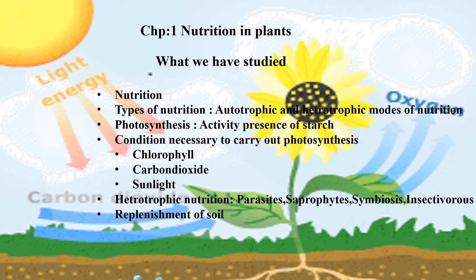Later on we studied about what is heterotrophic mode of nutrition. We have seen parasites, which are either partial or complete parasites — those who are completely dependent on the host plant for their food and other requirements. Then we have seen about saprophytes, that is organisms which are living on dead and decaying matter.